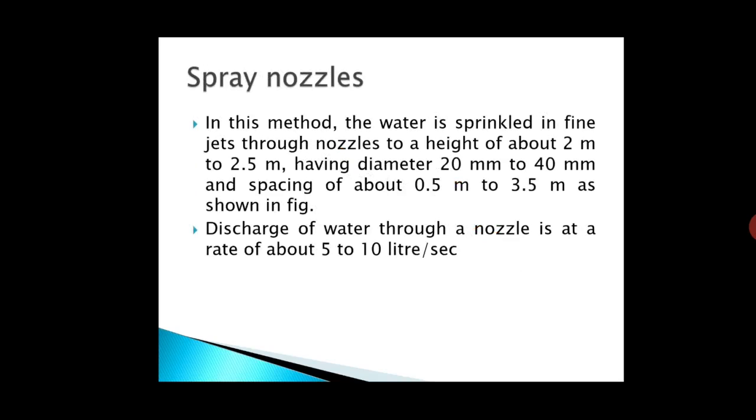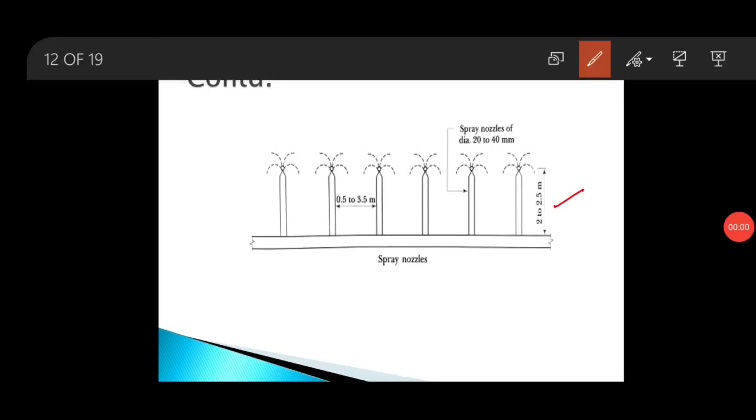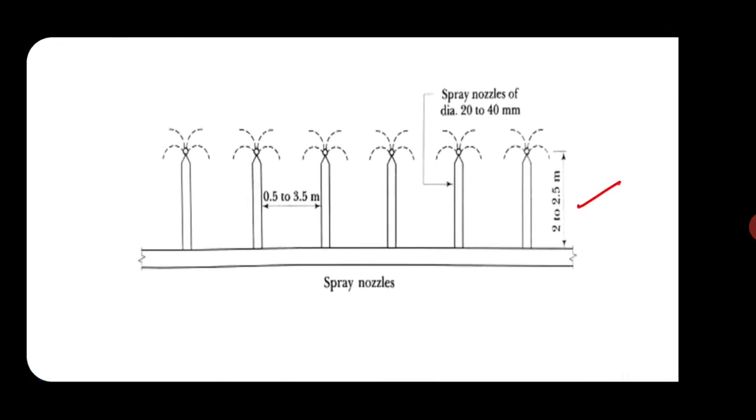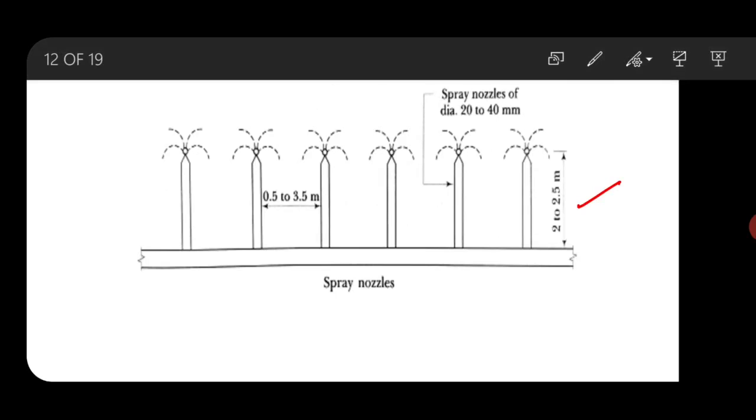The next method is spray nozzles. In this method, the water is sprinkled in fine jets through nozzles, the height of about 2 meter to 2.5 meter having diameter 20 mm to 40 mm, and spacing of about 0.5 meter to 3.5 meter. The discharge of water through nozzles is at a rate of about 5 to 10 liter per second.